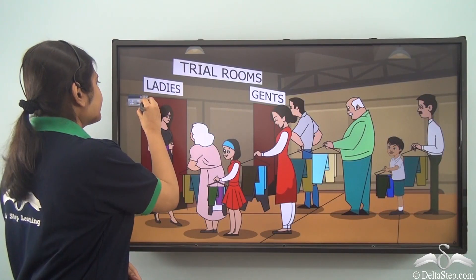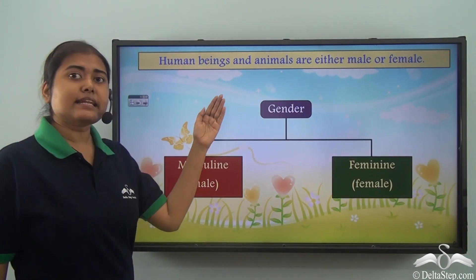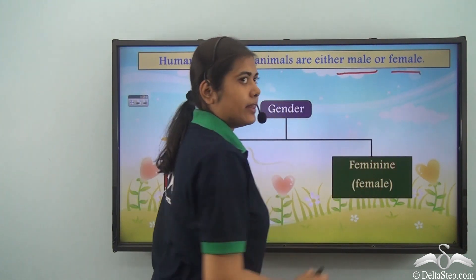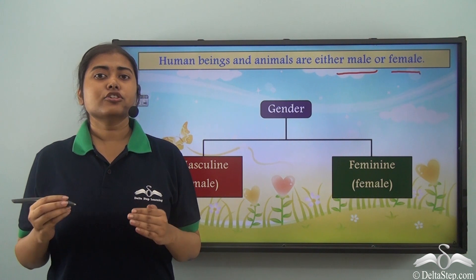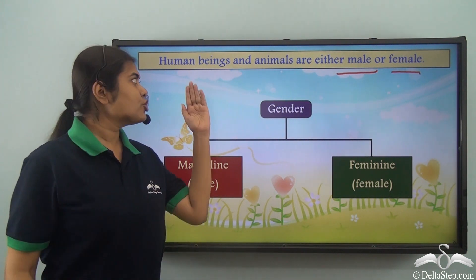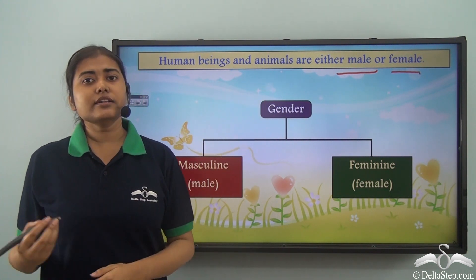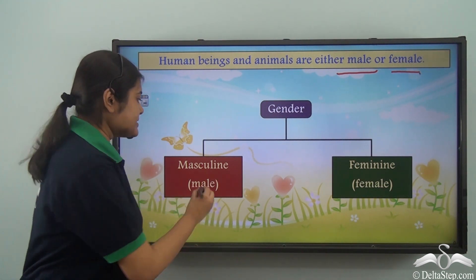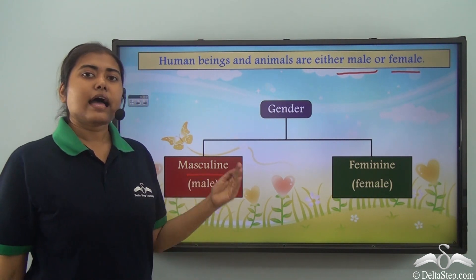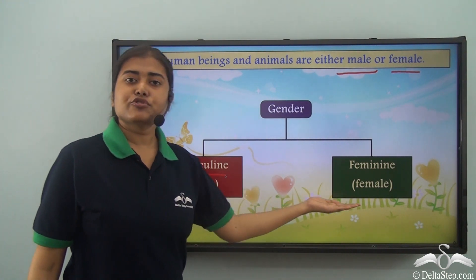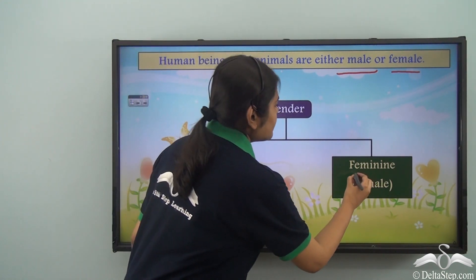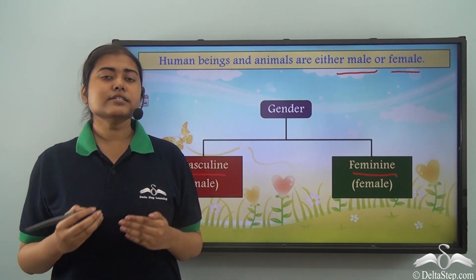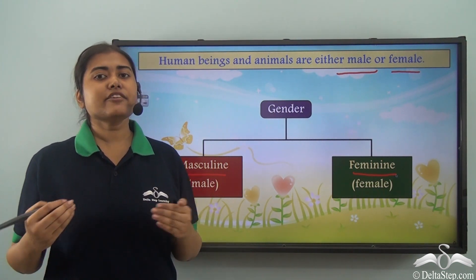Well, human beings and animals are either male or female. So there are two genders into which human beings and animals are divided. If they are males, they are referred to as masculine gender, and if the nouns refer to females they are called feminine gender. So there are two types of genders referring to male and female.